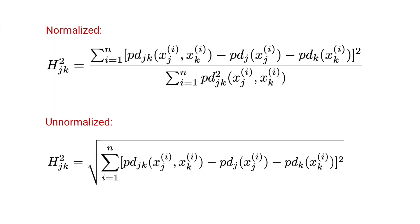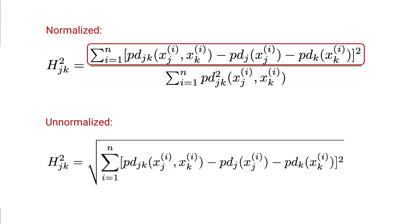To avoid this, a non-normalized version of the H-stat has been proposed — simply the square root of the numerator from the original equation — though we lose the useful interpretation. As another alternative, we can stick with the original equation and use a measure of feature importance such as permutation feature importance or mean SHAP. This allows us to understand which features make significant contributions to the prediction.